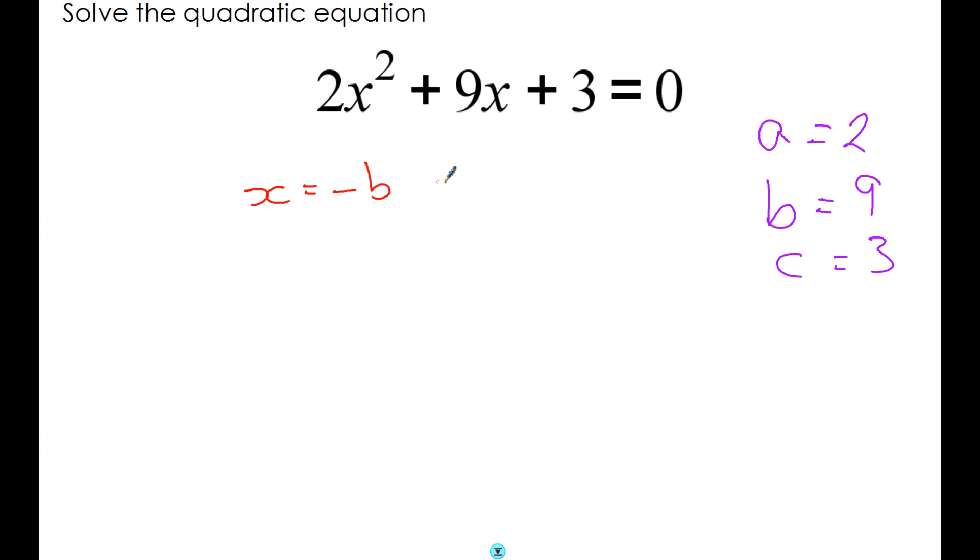The next thing you should do is write down the quadratic formula: x equals minus b plus or minus the square root of b² - 4ac, all over 2a.